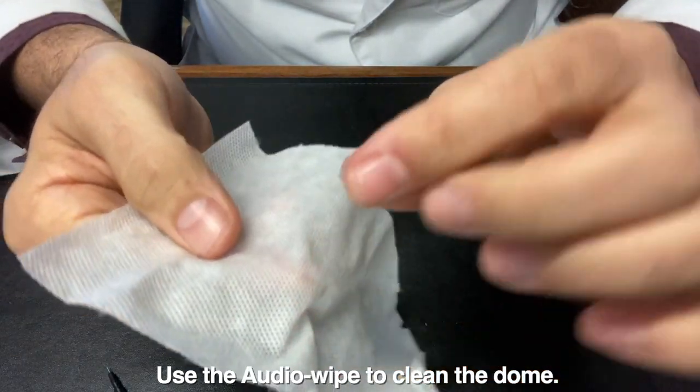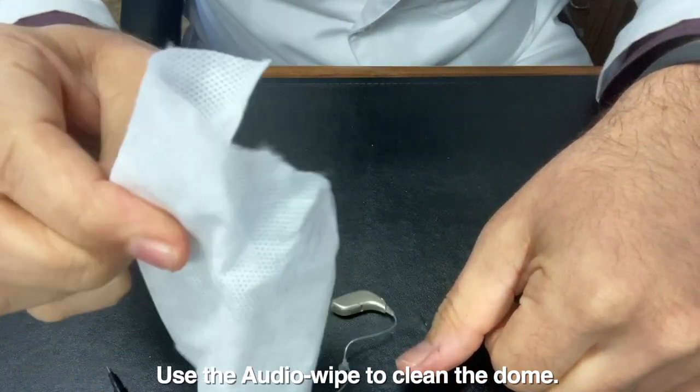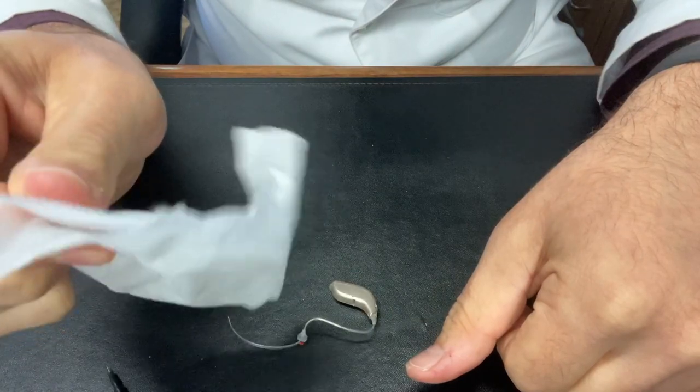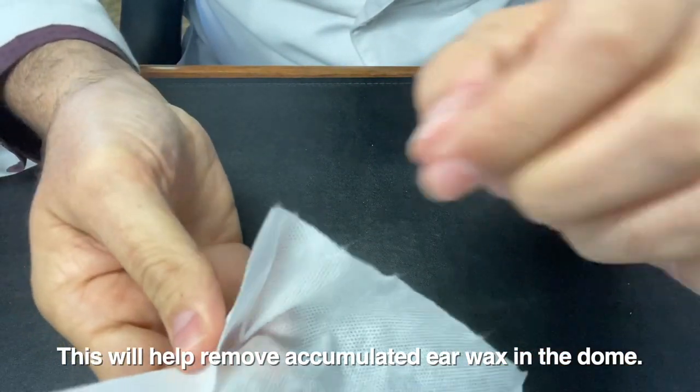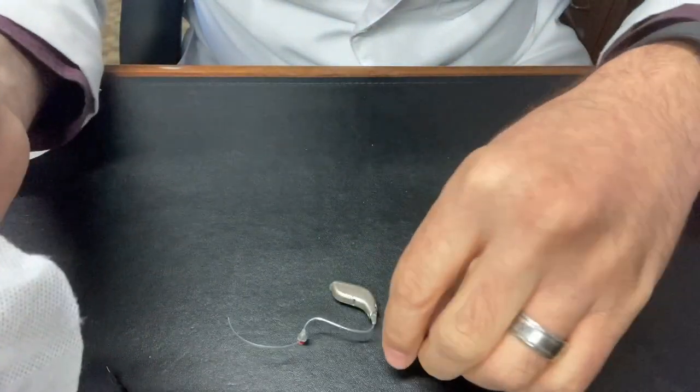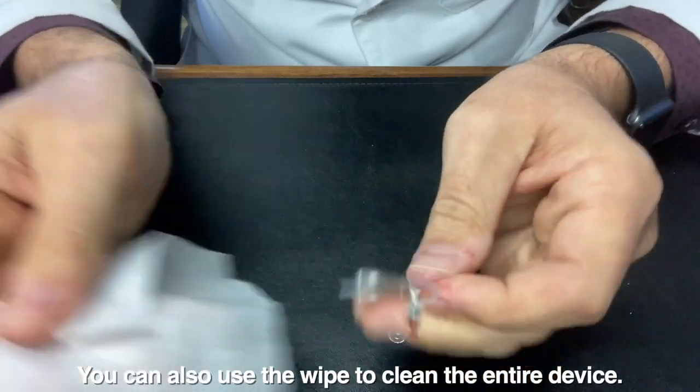I put that dome right in there and just mash it around. That'll clean out any wax that has accumulated in the dome itself. We'll put that off to the side. You can also use this wipe to just wipe down the whole thing.